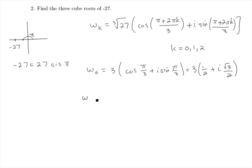When k equals 1, we have 3 times cosine of... So if k is 1 here, we have 2 pi plus pi, so 3 pi divided by 3. So it's pi plus i sine of pi. Sine of pi is 0, cosine of pi is negative 1. So we get our expected real solution, the only real root of negative 27, which is negative 3.